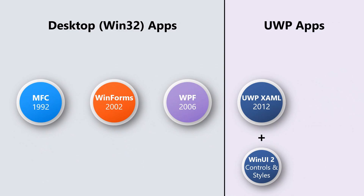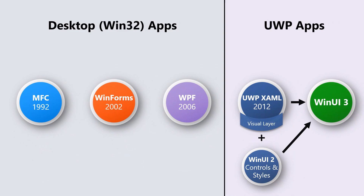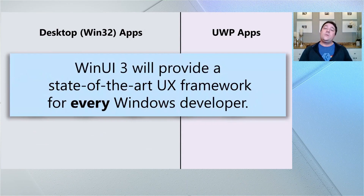WinUI 2 is how we ship all the latest and greatest Fluent controls and styles. WinUI 3 is literally the entire codebase of UWP XAML plus all of WinUI 2's controls and styles, plus other powerful layers of Windows technology including the Windows 10 visual layer, all wrapped up into a single UI framework. This framework will ship independently of the operating system on its own cadence, just like WinUI 2 does today. And most importantly, WinUI 3 will work in any type of app — it will work in UWP apps, but also in desktop apps as well. WinUI 3 will be the first of many Windows platform technologies to tear down the walls between Win32 and UWP, as part of what's called Project Reunion.